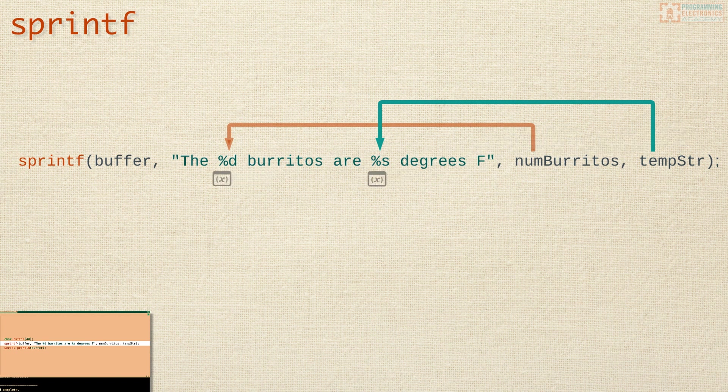In this example, we have two format specifiers. Therefore, we have two arguments at the end. The first one, numBurritos, will get inserted at that first format specifier. The second one, tempStr, will get inserted at the second format specifier. If we add more format specifiers in our string, we'd need to add more arguments to the end of sprintf.